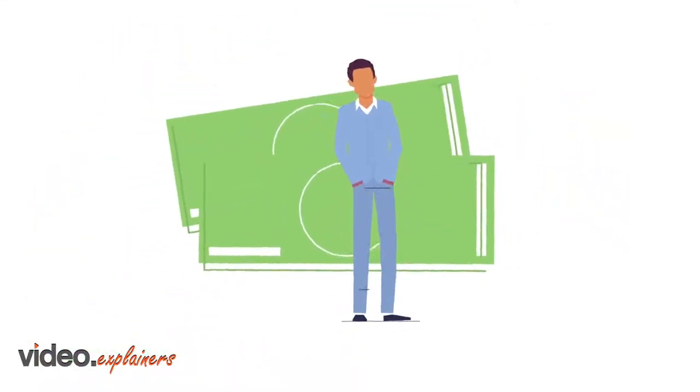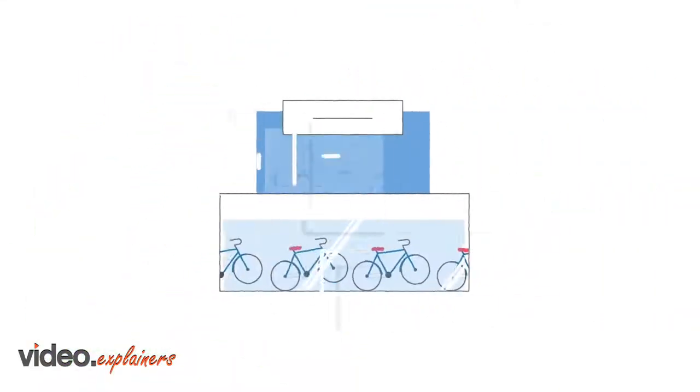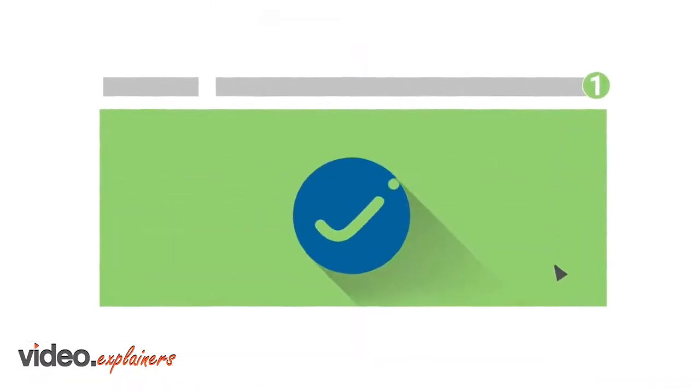Thomas owns a bike store and needs more capital to help grow his business during the busy summer season. Thomas receives an email from his payment provider introducing him to Jaris.